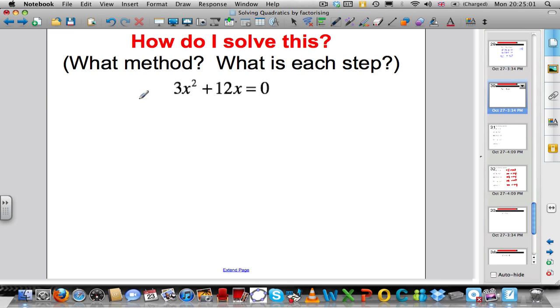One more example, 3x squared plus 12x equals 0. Trying to factorise, remember the very first type of factorising when we did algebra. What goes into 3x squared and 12x? What divides into those?